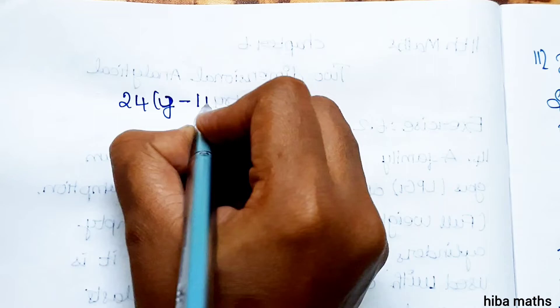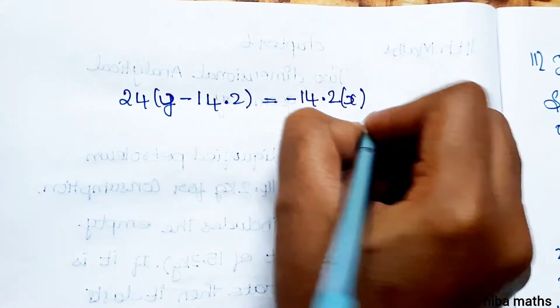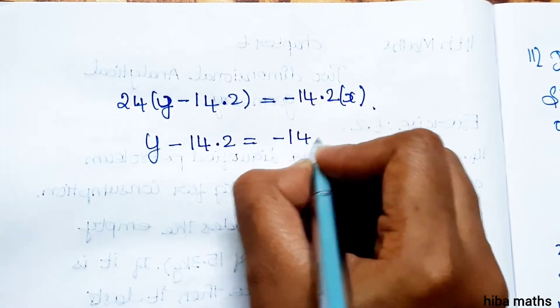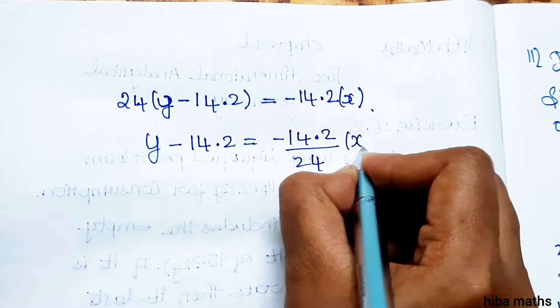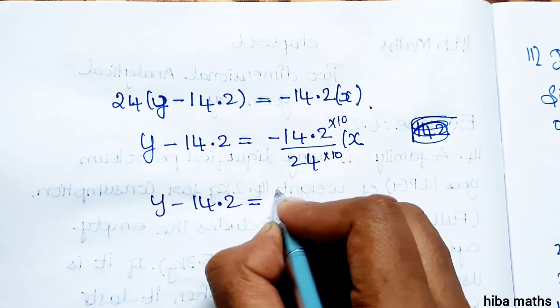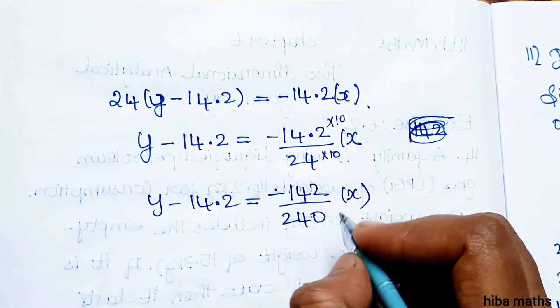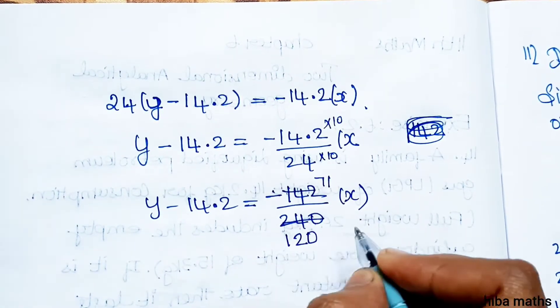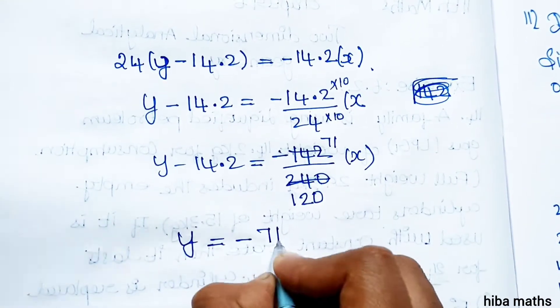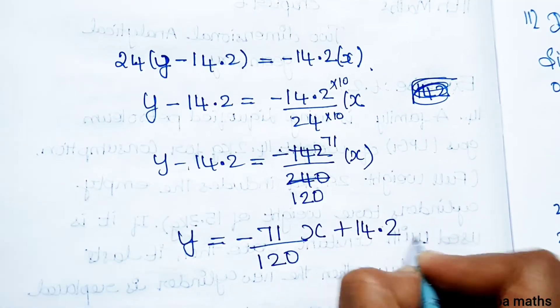Cross multiply: y - 14.2 = (-14.2/24) × x. Multiplying by 10: y - 14.2 = (-142/240) × x. Reducing: (-142/240) = (-71/120). Therefore, y = (-71/120)x + 14.2.